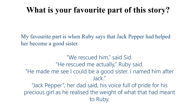What is your favourite part of the story? My favourite part is when Ruby says that Jack Pepper had helped her become a good sister. "We rescued him," said Sid. "He rescued me, actually," Ruby said. "He made me see I could be a good sister. I named him after Jack." "Jack Pepper," her dad said, his voice full of pride for his precious girl, as he realized the weight of what that meant to Ruby.